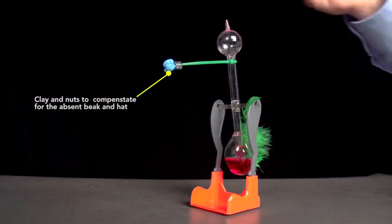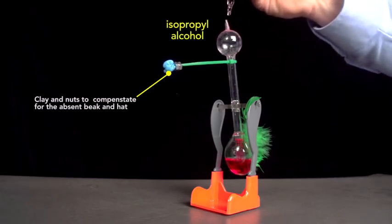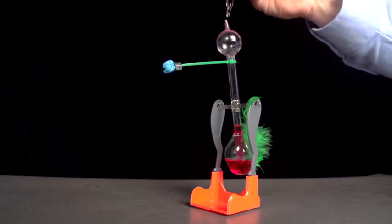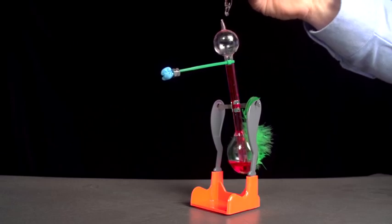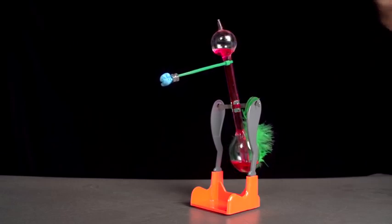Now watch as I put a few drops of isopropyl alcohol on the top bulb to cool it. The liquid rapidly rises to the head, and this changes the bird's center of gravity so that it will tilt forward. The head now fills with liquid.